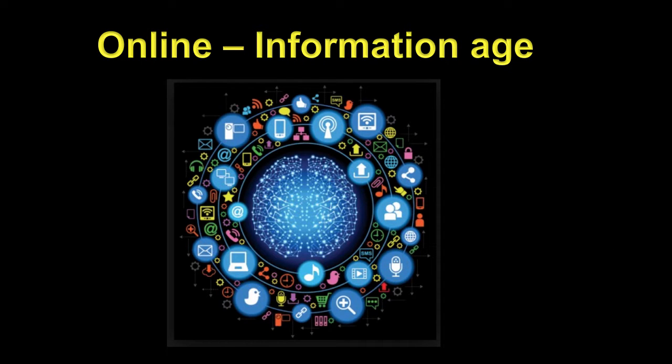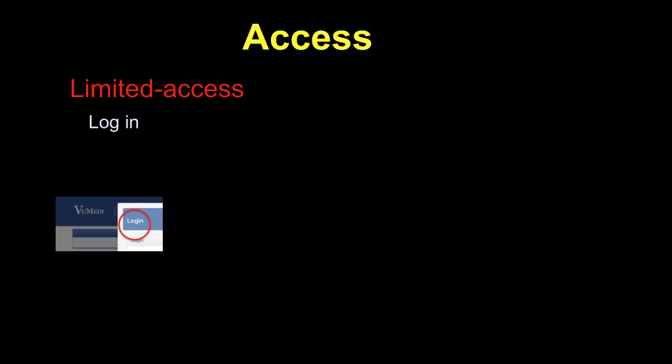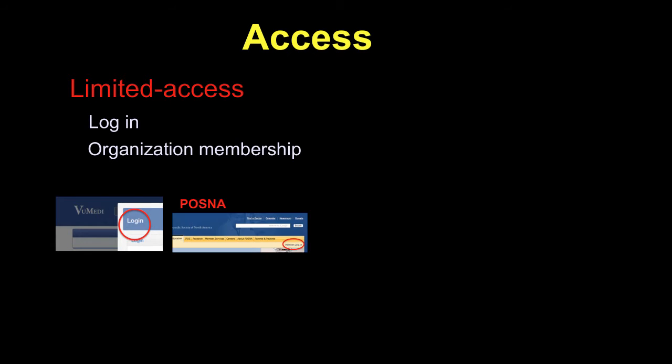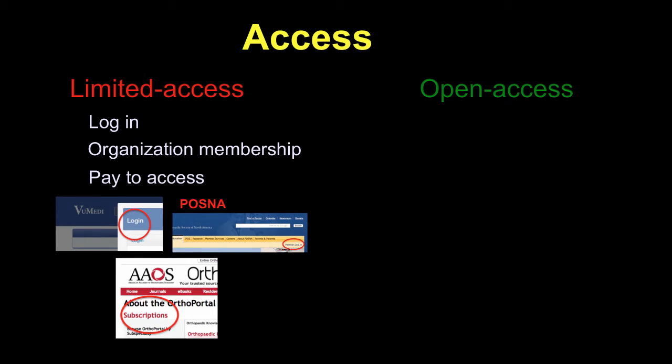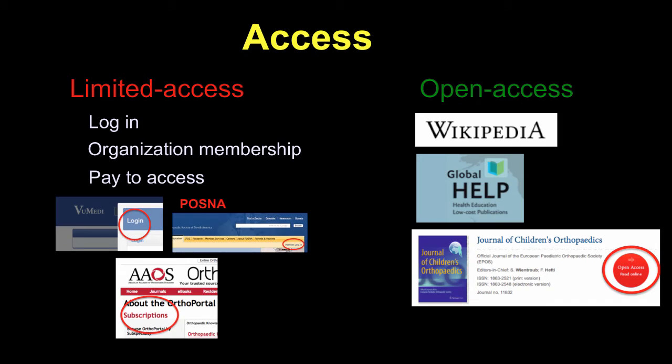We all agree we live in an information age, though it's online, and the access is often open or limited. Limited access requires a login, often an email address or organizational membership, or you may have to pay for access. Whereas open access, like Wikipedia or Global Help or the Journal of Children's Orthopedics, is very open and you go quickly into the topics.